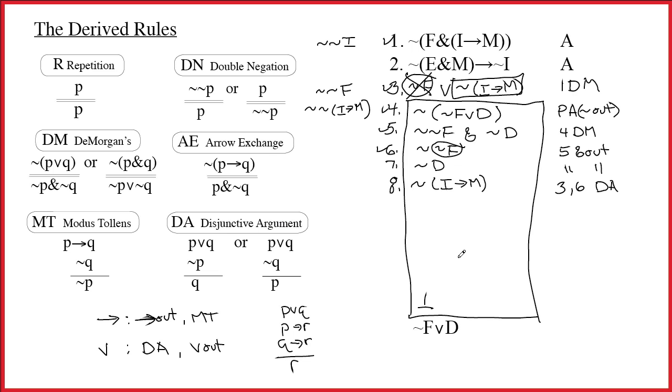Next step. Notice what showed up on line 8. It's tilde i arrow m. The tilde is the main connective. In fact, this is a pretty obvious arrow exchange, isn't it? So the arrow turns into an ampersand. You bring down the P part just as it's written, and you add a tilde to the Q part. So i ampersand tilde m is what we get, and that's 8 arrow exchange.